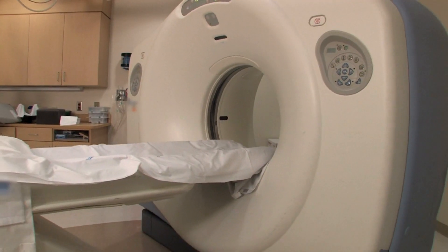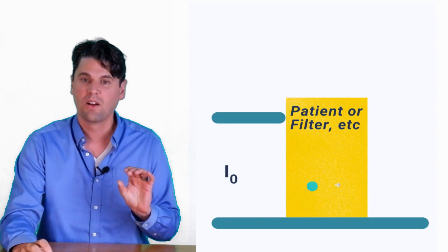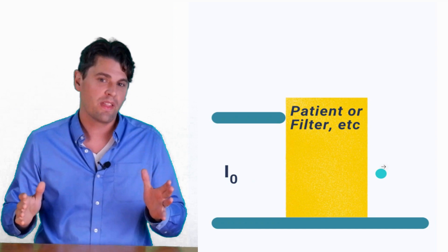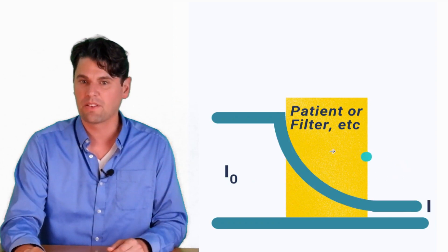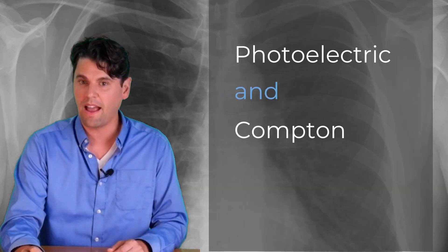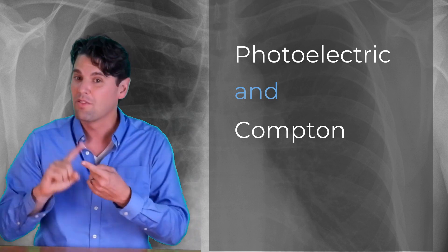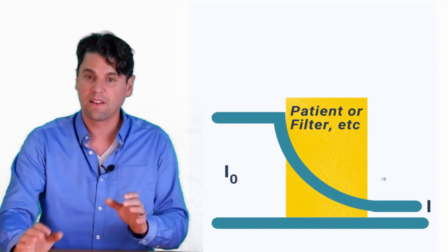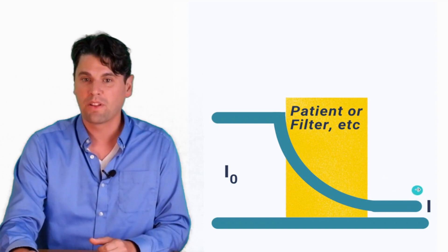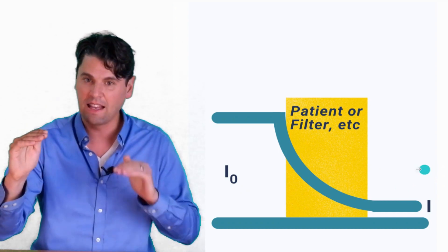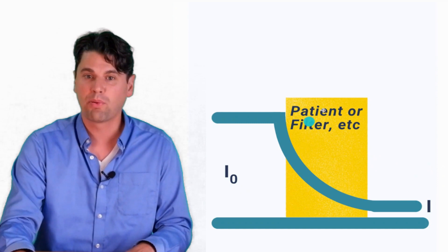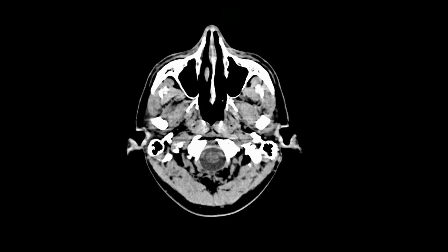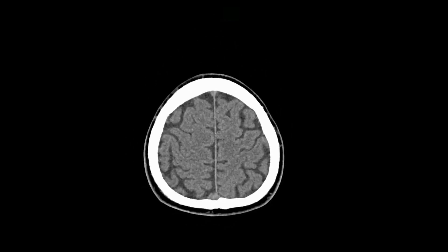In our CT scanning, the x-rays are going to come in. They're going to have an initial intensity or a number of x-rays we call I-naught — that's the initial intensity before they pass through the patient. If we think about a simplified patient made of just one material, the x-rays will be decreased in number as they go through due to photoelectric and Compton interactions. As they come out, they have an intensity I, and the difference between I and I-naught is what we use to calculate the attenuation coefficient. We make a map of those attenuation coefficients, which we call the CT number.